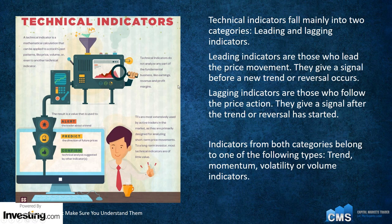Leading indicators lead the price movement — they give us a signal before a new trend or reversal occurs. Lagging indicators follow the price action and give us a signal after the trend or reversal has started. Indicators from both categories belong to one of five categories: trend, momentum, volatility, or volume indicators.